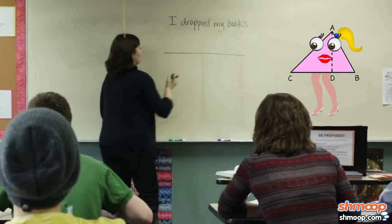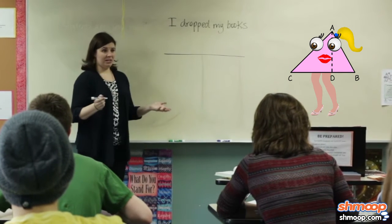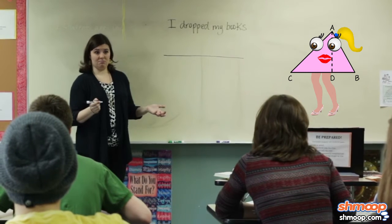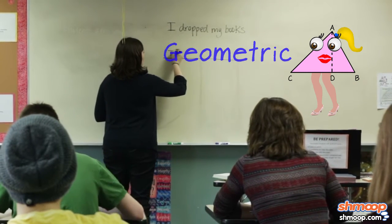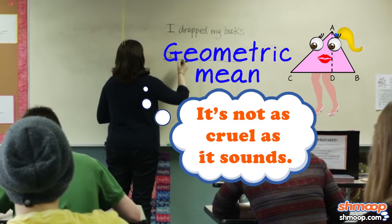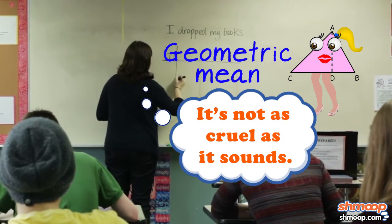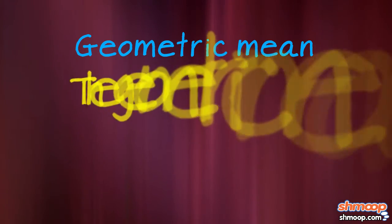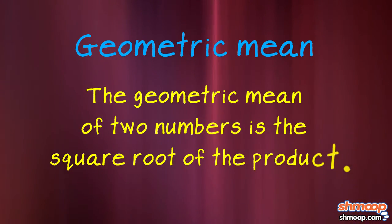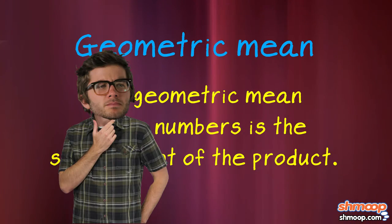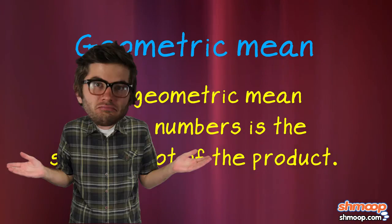If we want to find ABC's height, we can use something called the Geometric Mean. The geometric mean of two numbers is the square root of the product. It sounds simple, but how do we use it?